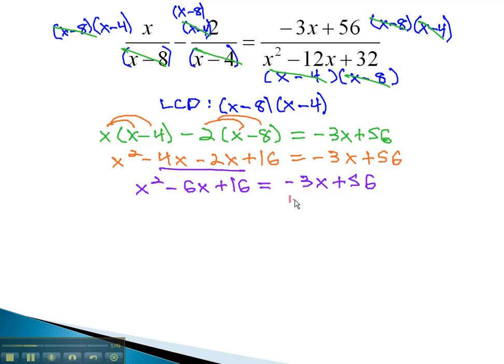It must equal 0 before we try and factor, so we'll add 3x and subtract 56 from both sides. This leaves us with x squared minus 3x minus 40 equals 0.